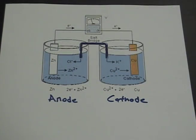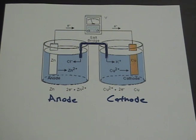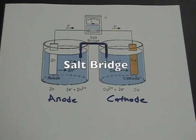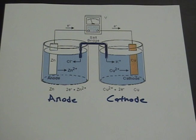Now let's talk about a different part of the battery. We talked about the two chambers and the wire, but what about this blue tube connecting the two? This tube is called the salt bridge — quite literally a tube of a salt solution between the two metal solutions.